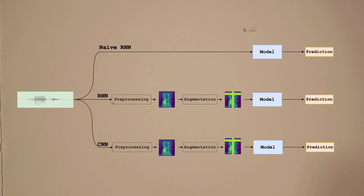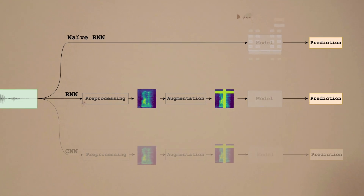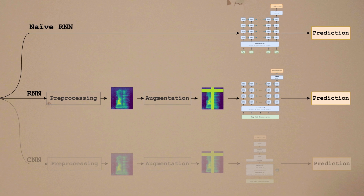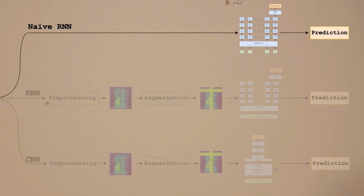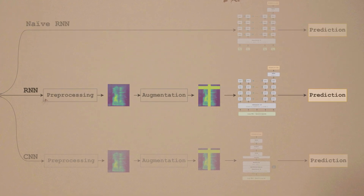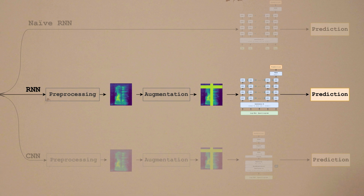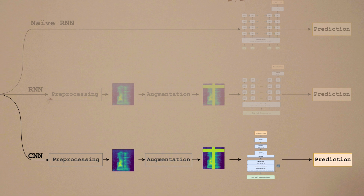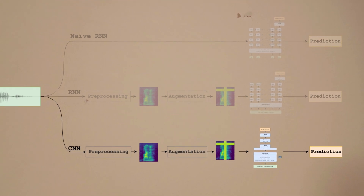We implemented three models to see which one performed better. Here's a quick overview. The two first models are both recurrent neural networks, which are well suited for processing sequential data, and therefore highly relevant as we are working with audio. One of the RNNs takes raw audio as input and is used as a baseline to evaluate the effects of pre-processing. The other RNN uses a pre-processed spectrogram as input. The third model is a convolutional neural network, which works especially well on grid-like data like the log-mel spectrogram, and is therefore selected. If you want to read more about the three models, please see our paper — the link is in the description.